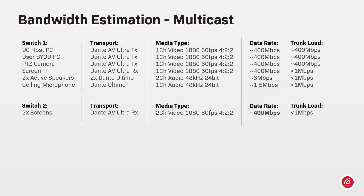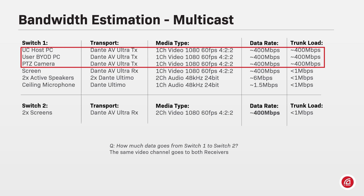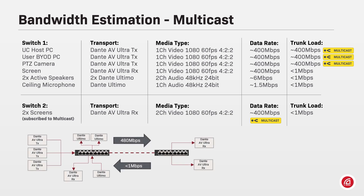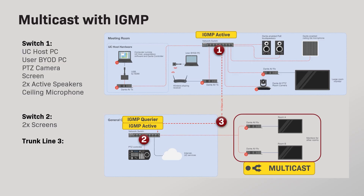Back to our bandwidth estimation, let's consider a multicast scenario. The image from any Dante AV source on switch 1 can now go to both receivers consuming just one video flow of the device. The multicast packets go through the trunk line and when they arrive at switch 2, as IGMP is activated, the switch will replicate that packet and send it only to the ports connected with devices subscribed to that multicast group. With the multicast flow you can reduce the trunk line load considerably — from the previous 960 megabits per second, now with only 480 megabits per second, both screens on switch 2 can subscribe to the same multicast video flow.